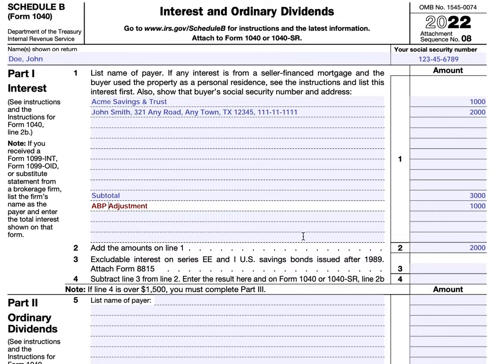In line three, once you've got the total amounts correctly calculated on line two, you would enter the amount of excludable interest on Series EE and I savings bonds that were issued after 1989. You would need to complete and attach IRS Form 8815, which reports this excludable interest for certain taxpayers that used that income for qualified education expenses. Generally it would be parents of college-age students redeeming their savings bonds to pay for higher education expenses.